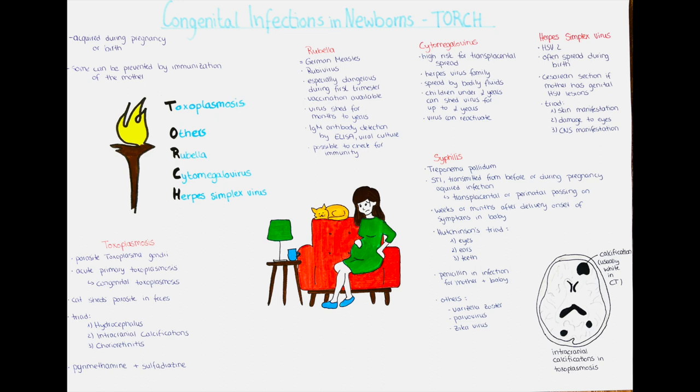Now we will talk about herpes simplex virus. In contrast to the other congenital diseases discussed so far, herpes simplex virus is more commonly spread during delivery — during the process of giving birth — rather than in the uterus, though in-utero transmission is possible but more rare. There is an indication for gynecologists to perform a cesarean section if the mother has genital herpes simplex virus lesions at the time of labor, to prevent spread during delivery. For severe congenital infections transmitted in the uterus, there is a triad of symptoms: skin manifestations such as vesicles and scarring, damage to the eyes, and central nervous system manifestations.